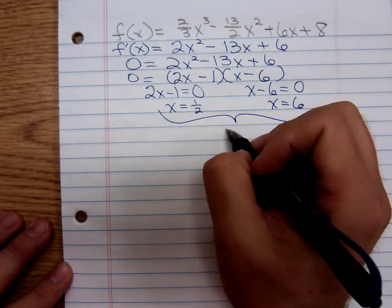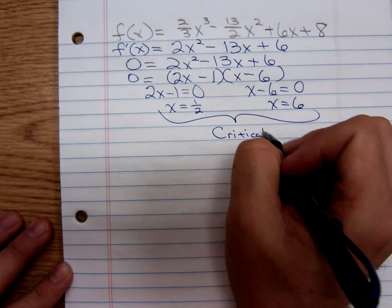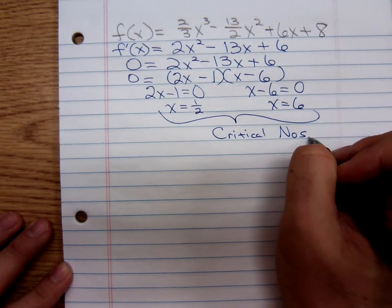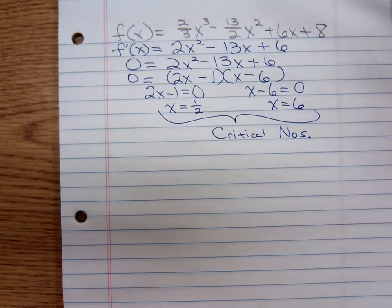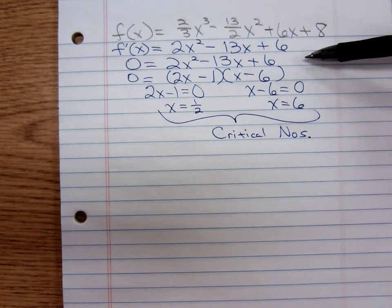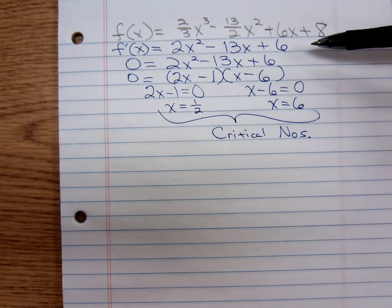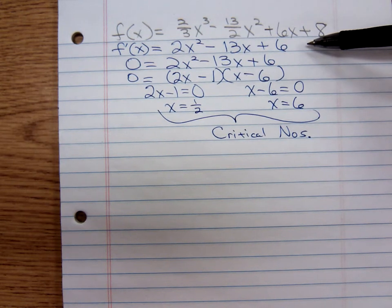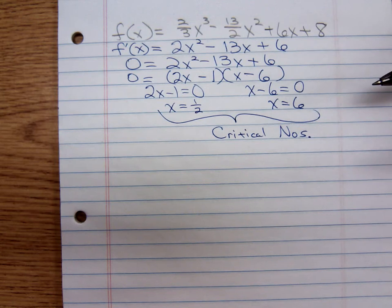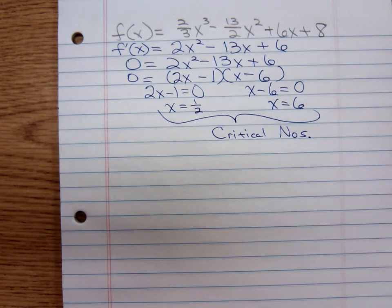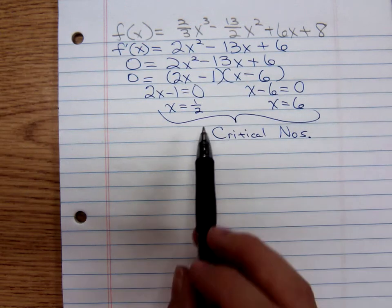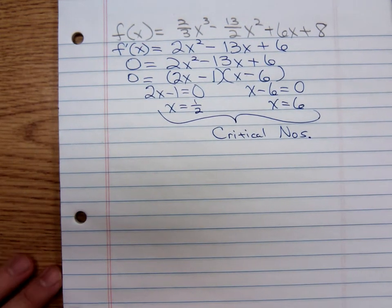Those are two critical numbers. Will we have any more critical numbers? We have to ask ourselves, when is the derivative equal to zero? When is it undefined? Will this derivative ever be undefined? No, it's always defined. So these are my only critical numbers: one-half and positive six.